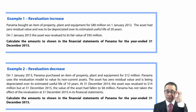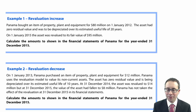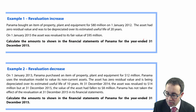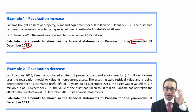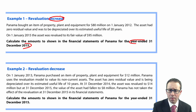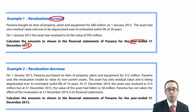Let's put this into practice with two examples. The first asks us to calculate the amounts to be shown in the financial statements of Panama for the year ended 31 December 2015 — a revaluation increase. Panama bought an item of property, plant and equipment for $80 million on 1 January 2012. The asset had a zero residual value and was to be depreciated over its estimated useful life of 20 years, giving $4 million per annum.